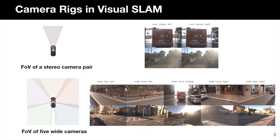Existing visual SLAM systems most commonly use a monocular camera or a pair of stereo cameras. One problem is that this camera setup inherently has a limited field of view, which might suffer from occlusions, illumination changes, and lead to tracking failures.